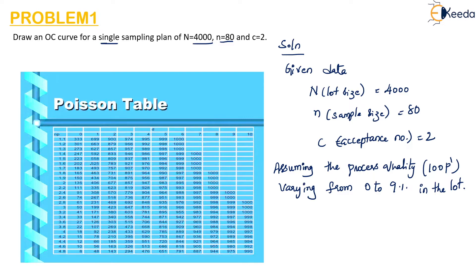This table is called Poisson's table. From this table we are going to take the probability of acceptance values based on the np' and c value. Here we can see the np' values and these are the c values, that is the acceptance number values: 0, 1, 2, 3, 4, 5, 6, 7 up to 10. And here they have given np' values such as 1.0, 1.1, 1.2. Based on these two values we will select the Pa values.